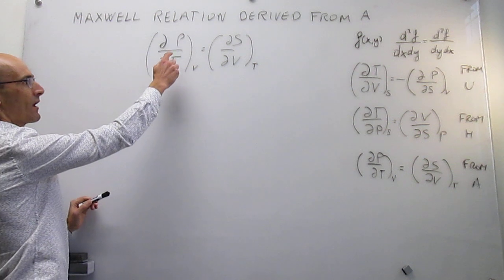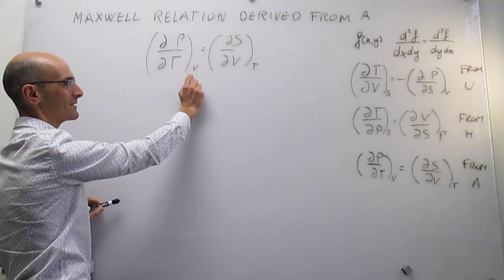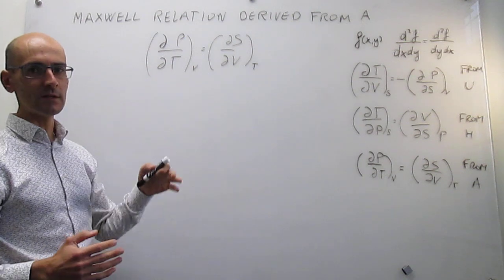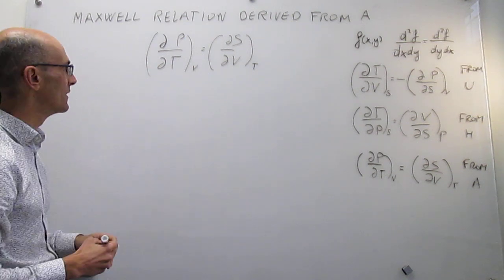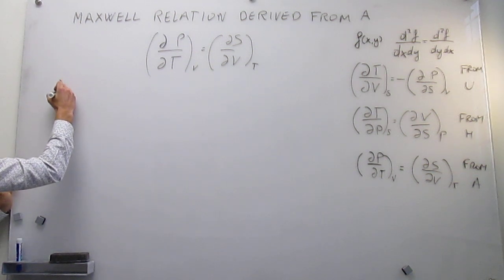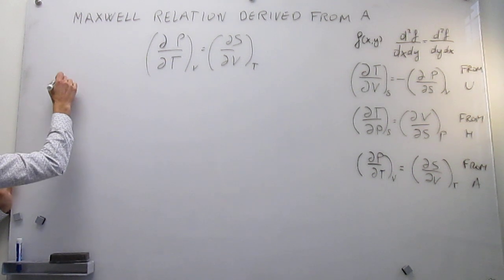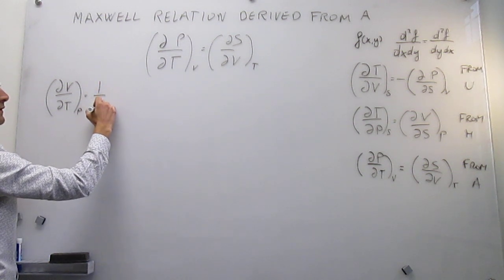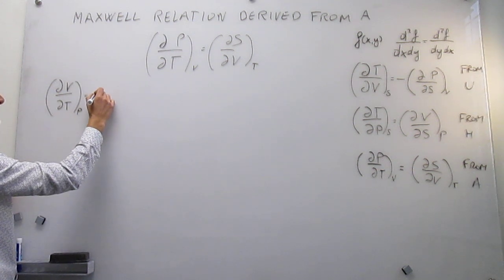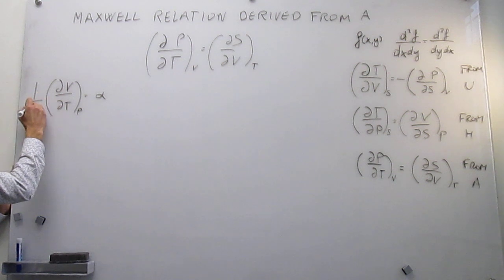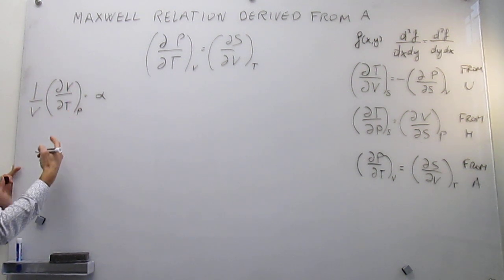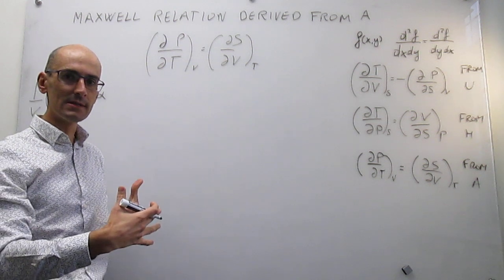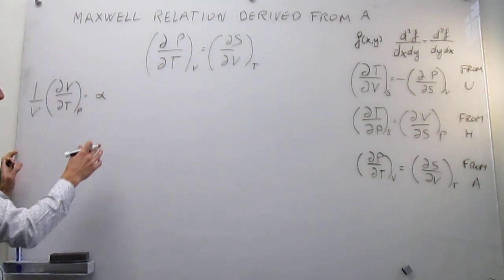Let's see how that works out. Notice that what we have is the first derivative of the pressure with respect to temperature at constant volume. We have very similar expressions for other properties we have studied. For example, the first derivative of volume with respect to temperature at constant pressure — this is related to the expansion coefficient alpha. The relation was: alpha equals 1 over V times the partial derivative of volume with respect to temperature at constant pressure. That is how materials expand when you increase the temperature — something that you can measure.